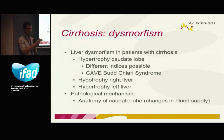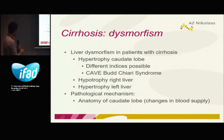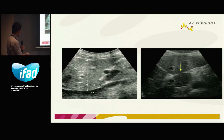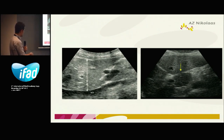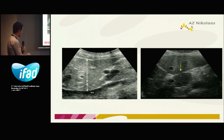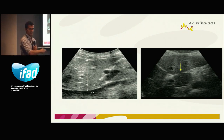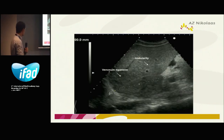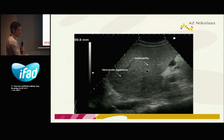Dysmorphism is very important — some parts of the liver enlarge while other parts are atrophic. Most importantly, we have hypertrophy of the caudate lobe. This is a normal caudate lobe — it's rather small. In patients with cirrhosis it gets larger with more rounded borders. So if you see this with nodularity of the liver, it's very specific for liver cirrhosis. Here again, the lobus caudatus — the caudate lobe — which is really large.